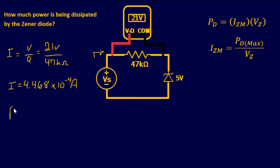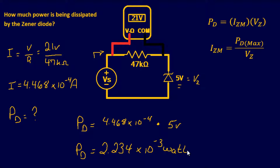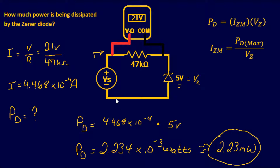Plugging into the calculator gives us 4.468 × 10⁻⁴ amps. Now that we have current, we find power dissipated: PD equals current times voltage. We know the voltage across the Zener diode is 5 volts, so PD equals 4.468 × 10⁻⁴ times 5 volts, which gives us 2.234 × 10⁻³ watts, or approximately 2.23 milliwatts. That is our final answer.